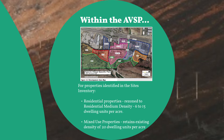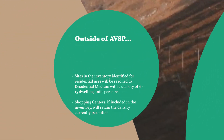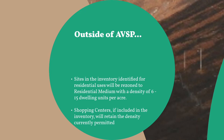For properties within the AVSP that are currently designated for mixed use or proposed to be rezoned to mixed use, staff is recommending a default density of 20 dwelling units per acre. For properties outside of the AVSP on the sites inventory, staff is recommending the residential-only sites be rezoned to residential medium density with a density of 6 to 15 dwelling units per acre. The shopping centers that currently have residential density will retain the current number of units they are entitled to today, with no change.